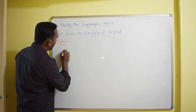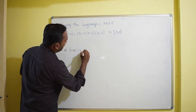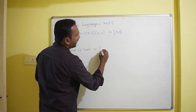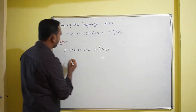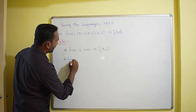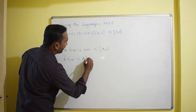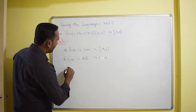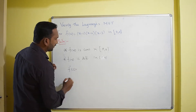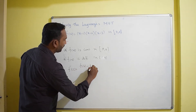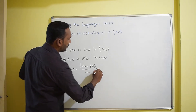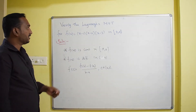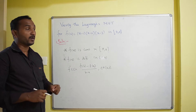The first condition is that f(x) is continuous in the closed interval — in general, [a,b], here given as [0,4]. The second condition is that f(x) is differentiable in the open interval (0,4). If these two conditions are satisfied, then there exists c such that f'(c) = [f(b) - f(a)] / (b - a), for some c belonging to the open interval (a,b). These are the conditions for Lagrange's Mean Value Theorem, and we will verify them one by one.